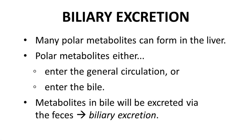Another excretion pathway is biliary excretion, excretion in the bile, which is formed in the liver. As with renal excretion, the properties of oral drugs do not lend themselves to biliary excretion. Polar drug metabolites, especially conjugation metabolites — phase 2 metabolites — are more prone to being excreted in the bile from the liver. The metabolites ultimately reenter the GI tract in the small intestine and will be excreted in the feces. This overall process is called biliary excretion.